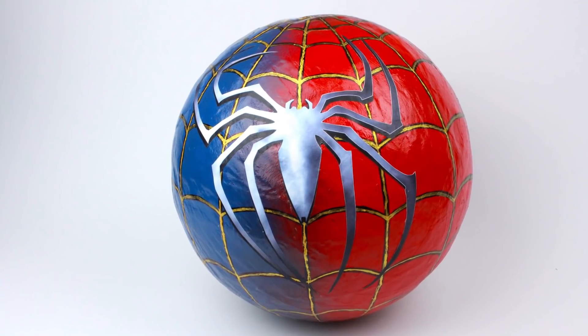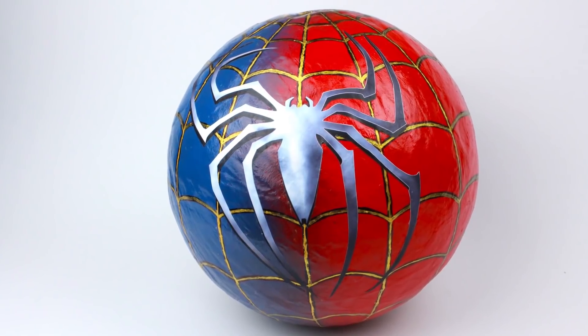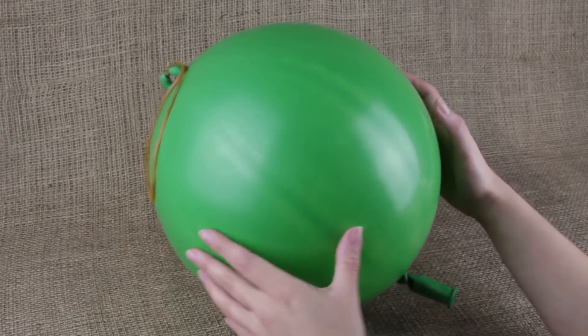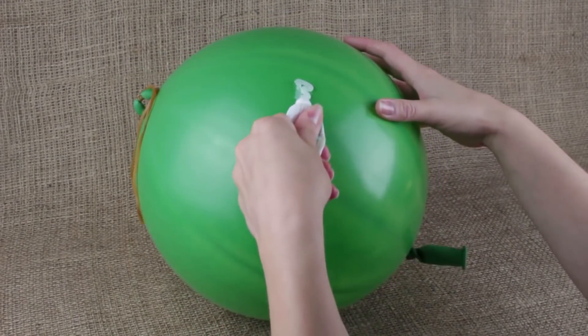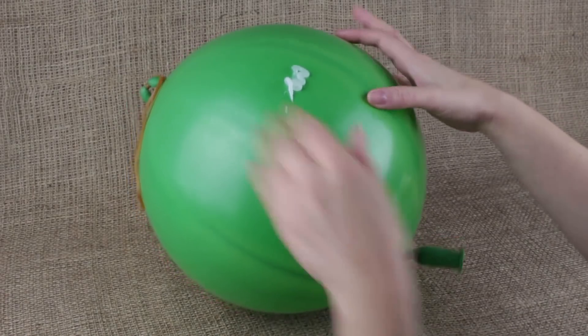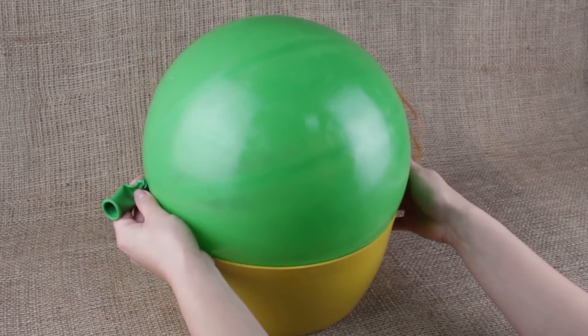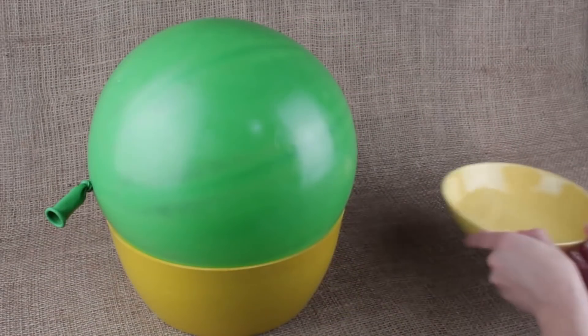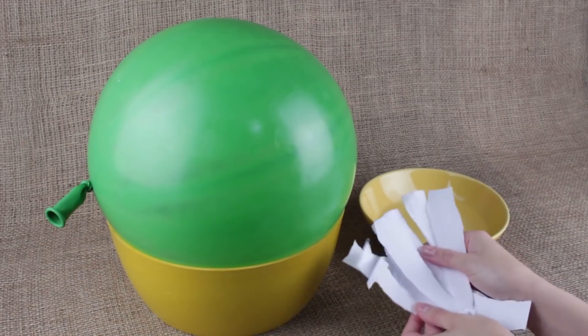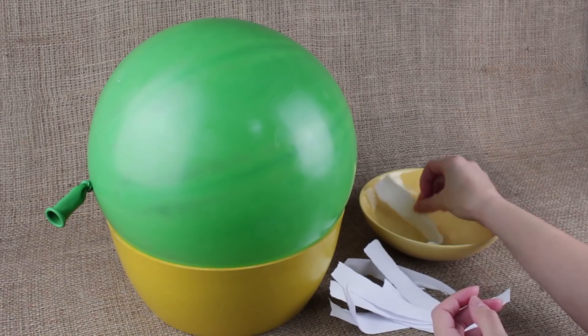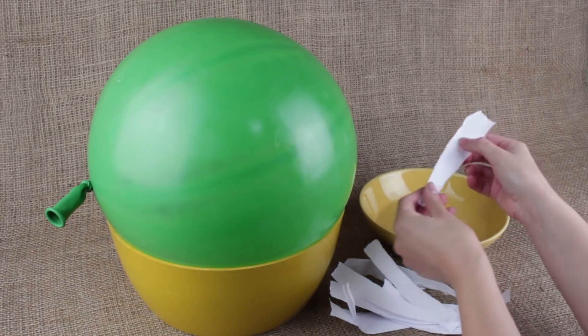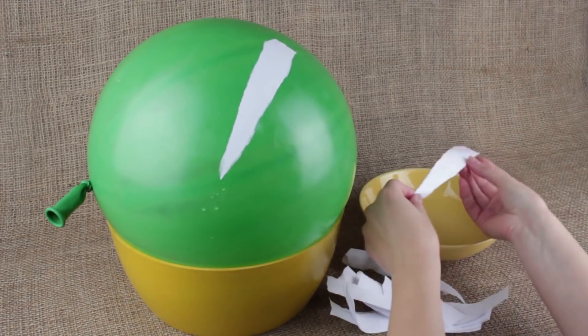In our tutorial, we'll make a cool Spider-Man logo paper mache pinata. Inflate a round balloon. Smear a fatty cream over the surface. To make the job easier, place the balloon in the bowl to fit the size. Take a bowl of water. Tear the paper into strips. Soak the paper strips. Make the first coat attaching the strips one by one overlapped.